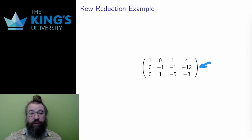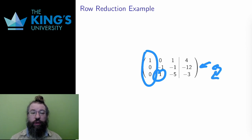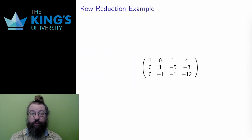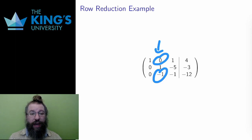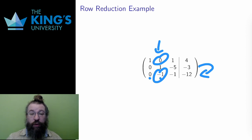Now the first column is finished — it has a leading one and zeros below it. I move on and look for another leading one. I see a leading one in the third row, but since I like working from the top row down, I'll switch the second and third rows. Now I have a leading one in the second row and I want to clear its column. Above there is already a zero, but below there is a negative one. I add the second row to the third, and that operation will get rid of the negative one. Zero plus zero stays zero, one plus negative one gives zero, negative five plus negative one gives negative six, and negative three plus negative twelve gives negative fifteen.